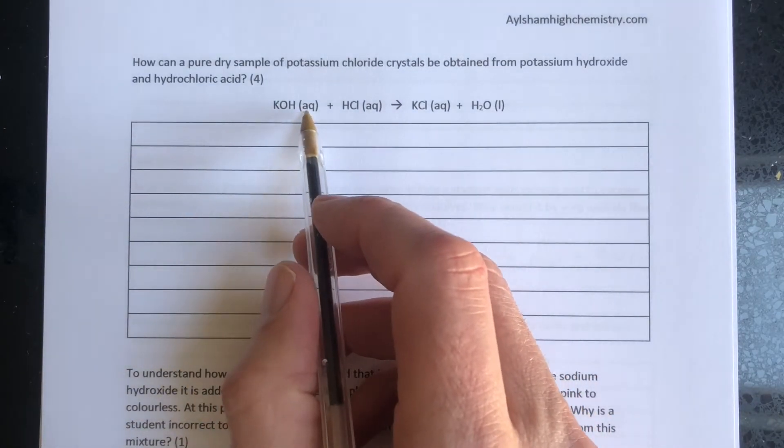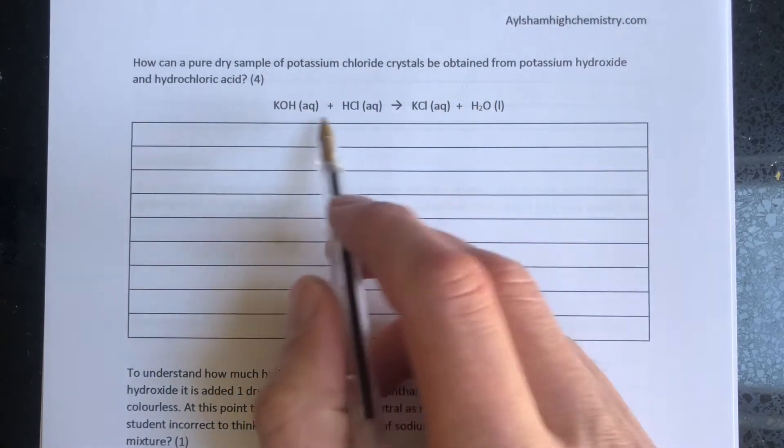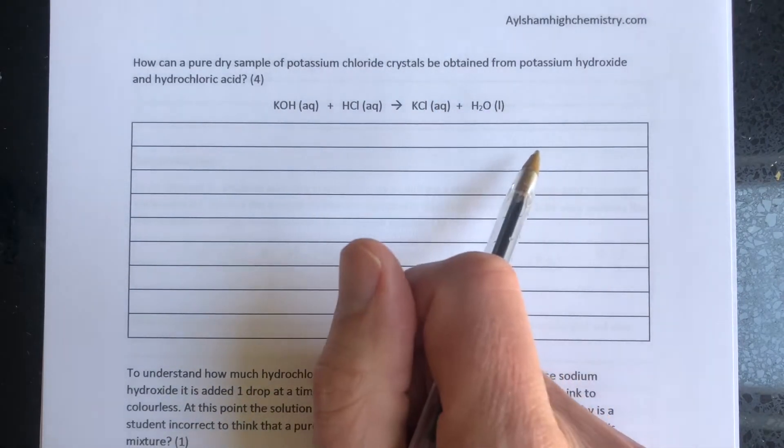In this case, we've got aqueous potassium hydroxide, aqueous hydrochloric acid, aqueous potassium chloride, and water. Everything is soluble apart from the water, which is a pure liquid.